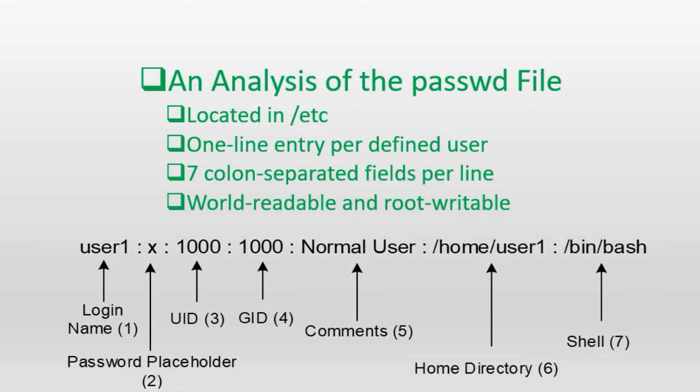Let's take a close look at the passwd file and analyze a sample entry to understand how it stores information. The passwd file maintains a one-line entry per user account, with each line containing seven colon-delimited fields. The permissions on this file are typically world-readable and root-writable. This file is referenced by the login program when a user attempts to log into the system for user validation.